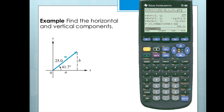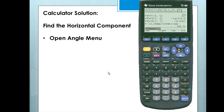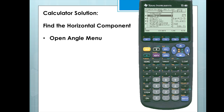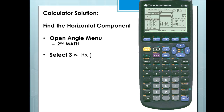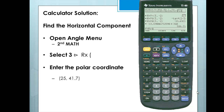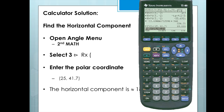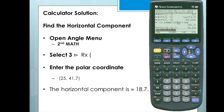Next, we'll find the vertical and horizontal components for vector W, which has a magnitude of 25 and a direction angle of 41.7 degrees. We'll open the angle menu with 2nd and Math, scroll down to Angle, and move the cursor to the right. We'll select the third option, enter the polar coordinate 25 comma 41.7, close off the function, and we have a horizontal component of 18.7.